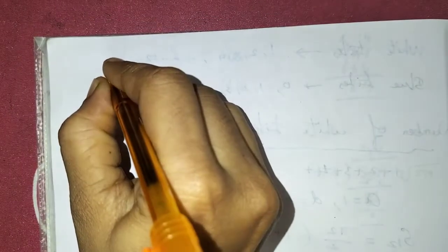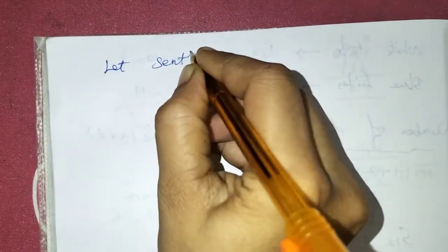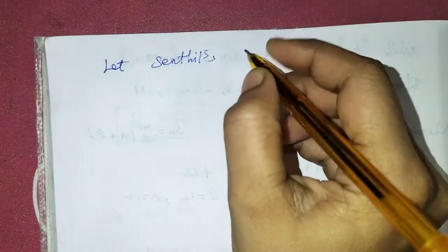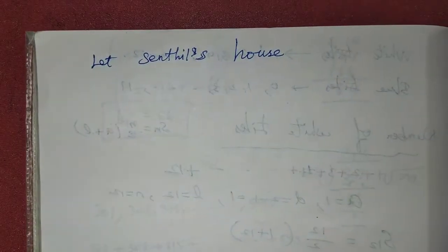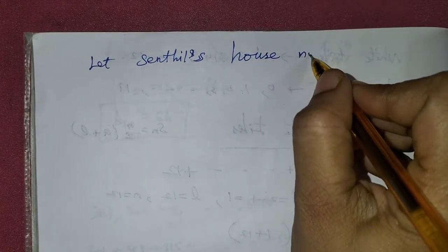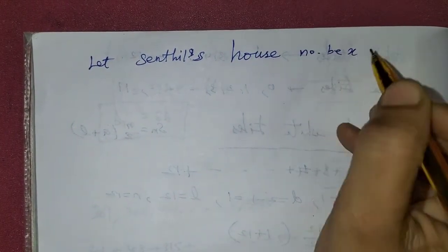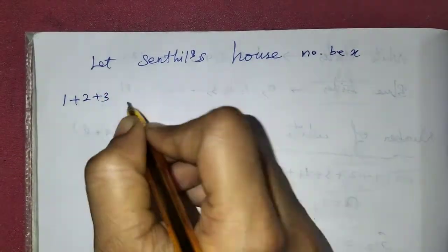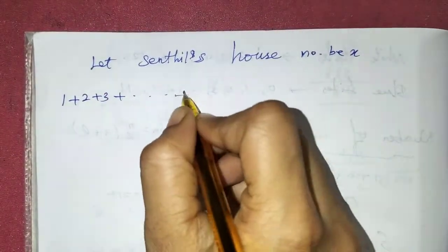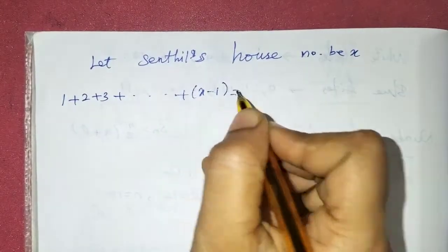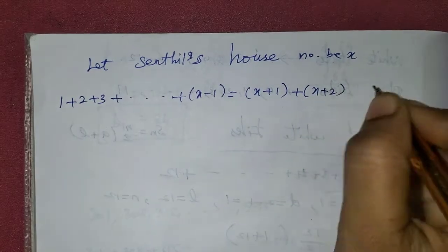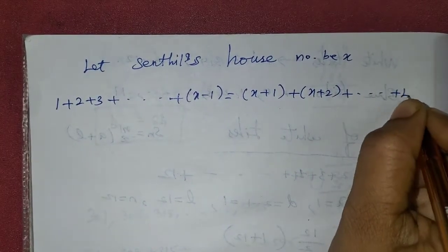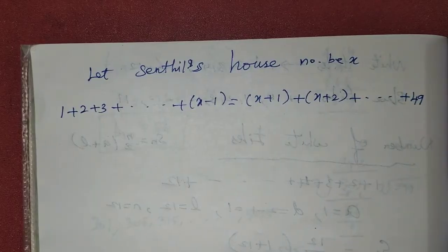We need to find x. Let Sendhil's house number be x. The given condition is: 1 plus 2 plus 3 plus ... plus (x minus 1) is equal to (x plus 1) plus (x plus 2) plus ... plus 49.